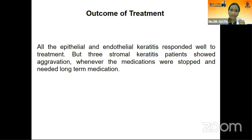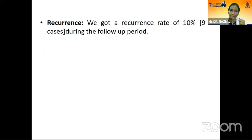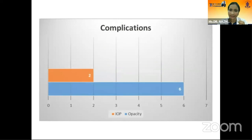We got a recurrence rate of 10 percent, which is nine cases, during the follow-up period. Complications noted included corneal opacity in six cases and raised intraocular pressure (IOP) in two cases.